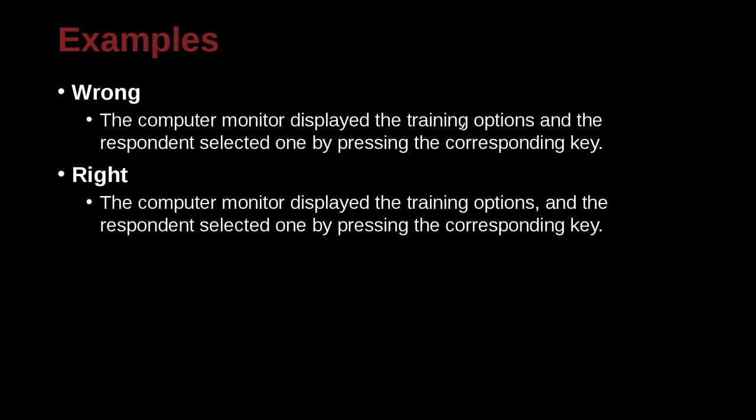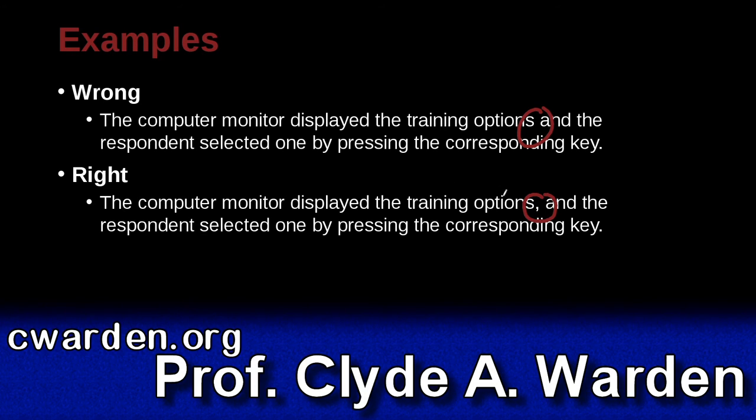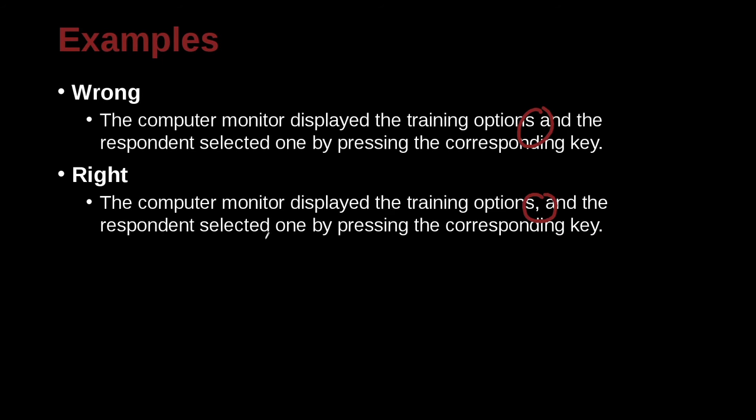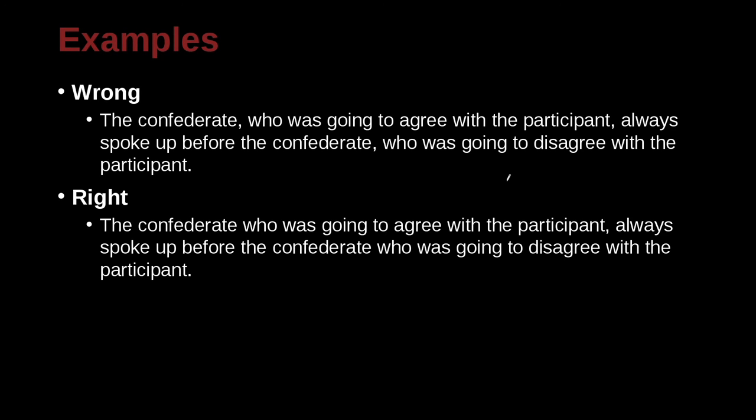The computer monitor displayed the training options and the respondent selected one by pressing the corresponding key. Here we have a comma and here we have no comma. So which one is correct? Well, we can see that the correct one's with a comma and that is because the computer monitor displayed the training options - that can be a sentence. That's good. The respondent selected one by pressing the corresponding key - that can be an independent sentence. So these two can be independent. So we can use the conjunction and the comma.